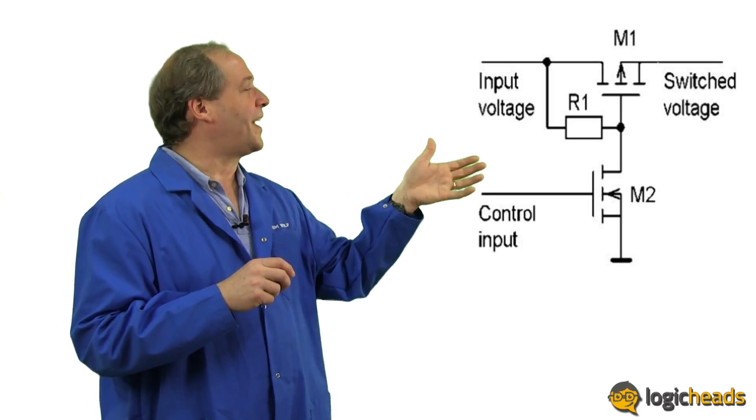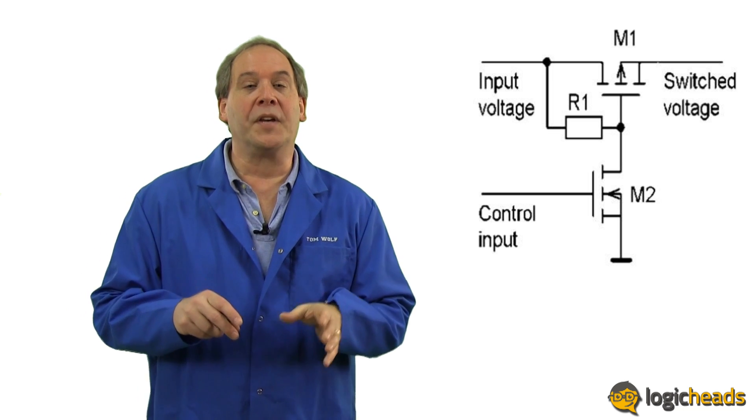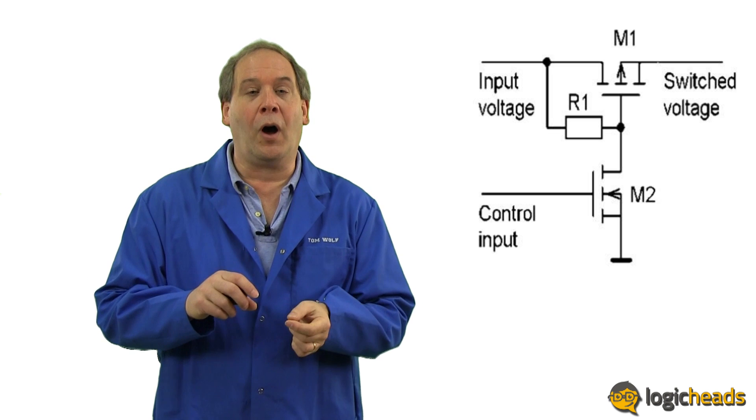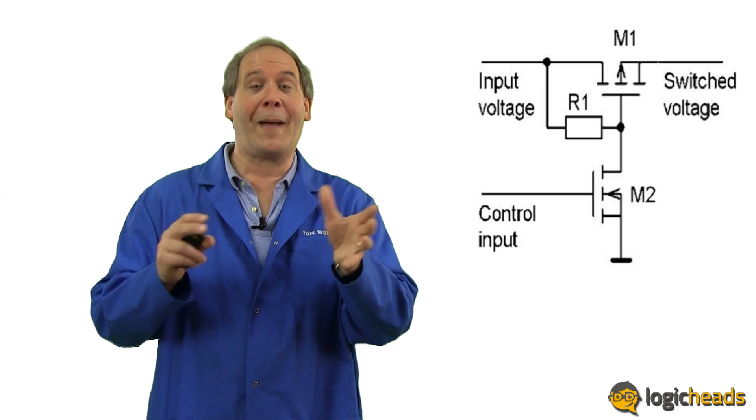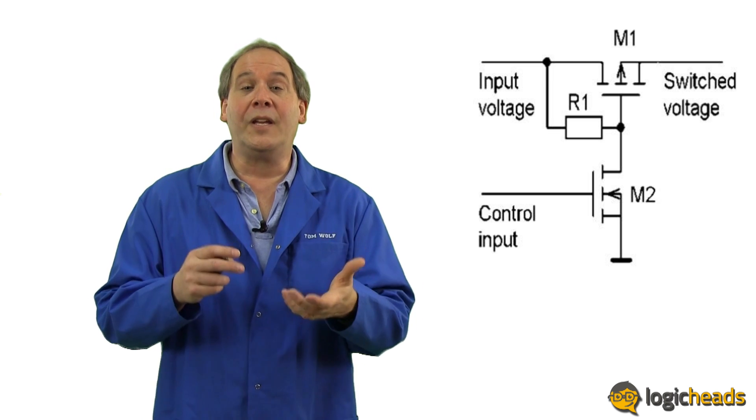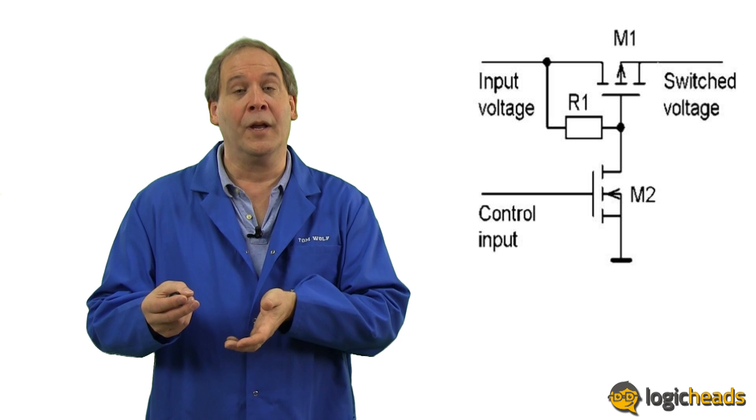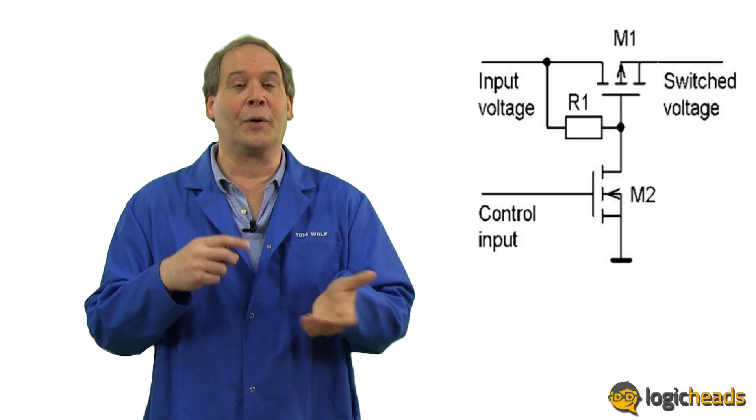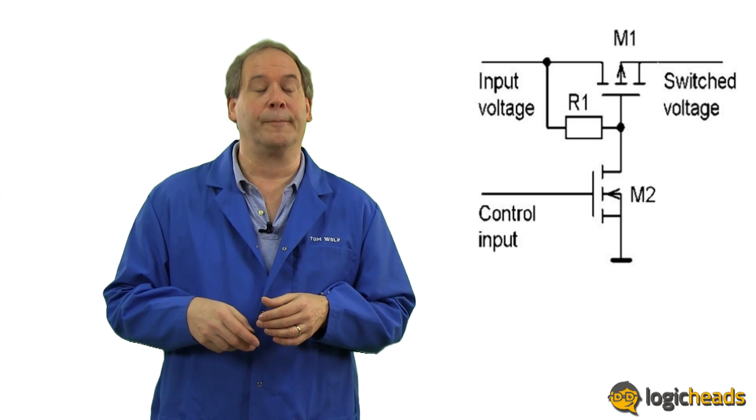There's also typically a second FET inside, in this case the FET M2. This is there because of the nature of the FET M1. It switches the load on when its gate is a binary low. This is sort of backwards logic. For convenience and safety you really want a high signal on the control pin to turn on the load switch. This FET M2 provides this inverter function and makes the logic work out and also makes it easier to connect this to the rest of the control circuit.